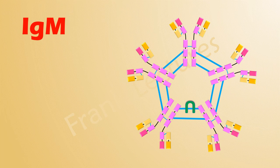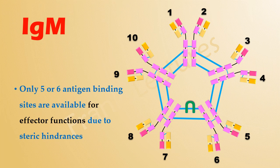As you see in this image, theoretically IgM pentamer has 10 antigen-binding sites. But only 5 or 6 of them are available for effector functions because of steric hindrances. Still, this number of antigen-binding sites is the maximum among all antibody classes.